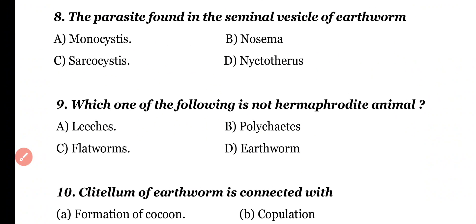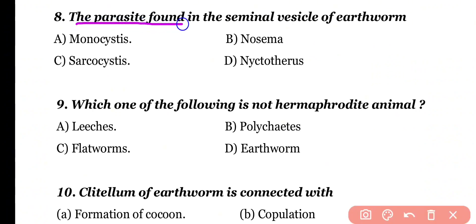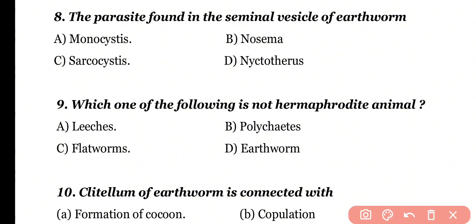Question number 8. The parasite found in the seminal vesicle of earthworm is: Monocystis, Nosema, Sarcocystis, or Nyctotherus. Correct answer is option A.